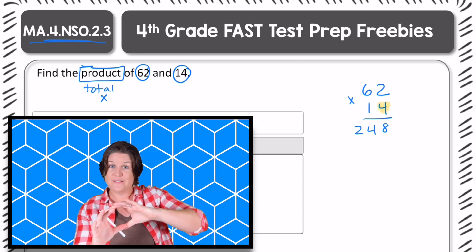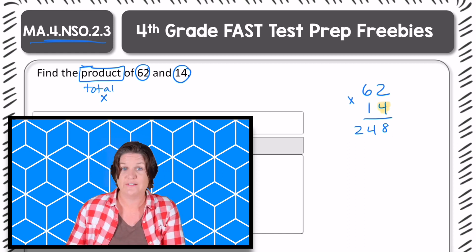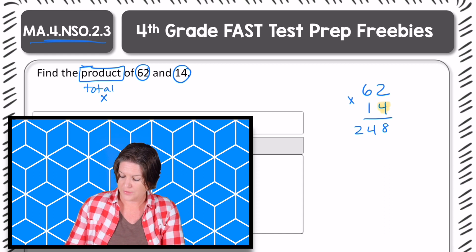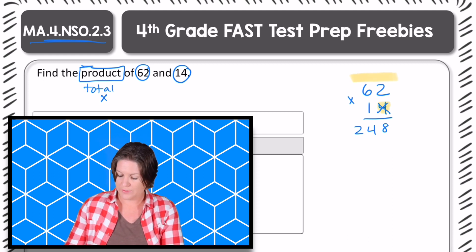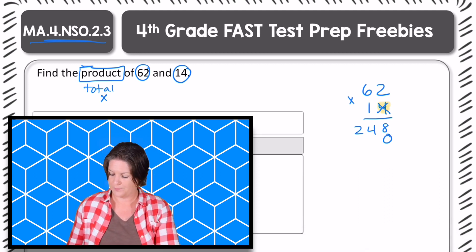And then I like to cross out, erase, and place a zero to show that we're moving over to multiplying the digit in the tens place. So cross out. If I had any regrouped numbers up there, I call them regroupies, I would erase those. And then finally, we will place a zero.